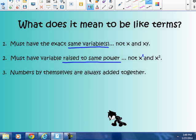And numbers by themselves are always added together. They are like terms, constants. So if you have 6 and 10, you can put those together and call that 16. Constants, numerical constants are always ones that we can add together.